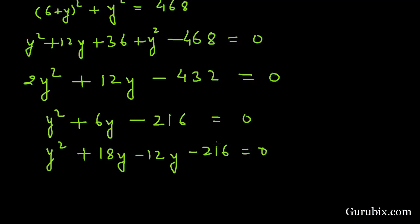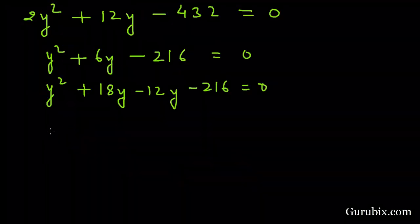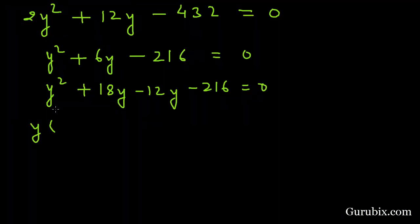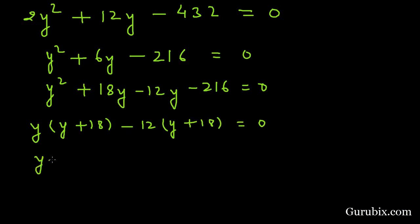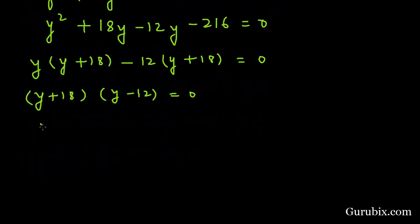Here we have y square. So this equals, we shall take y common from first two terms, then we have y plus 18 in the bracket. Here we have minus 12, so y plus 18 will be in the bracket. So we have y plus 18, here we have y minus 12 equals 0.